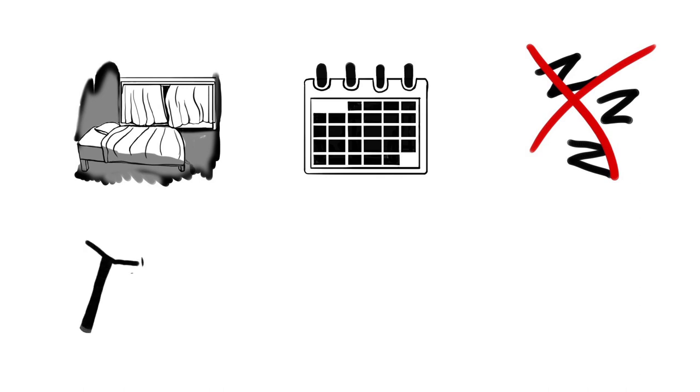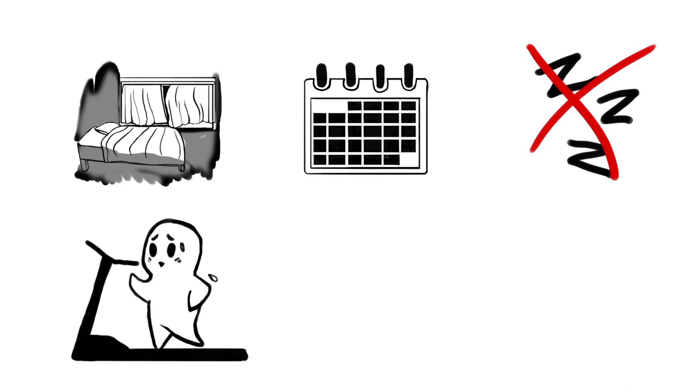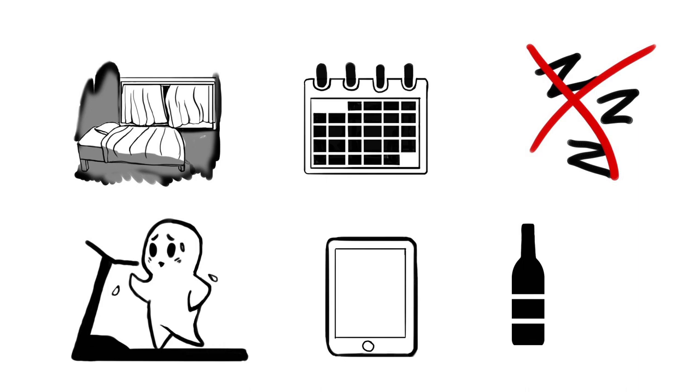Four, avoid stimulating activity and stressful situations before bedtime. Five, don't read from a backlight device. Six, limit the consumption of caffeine, alcohol, and nicotine.